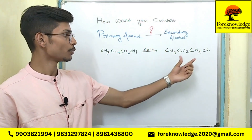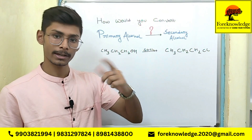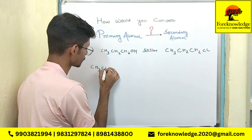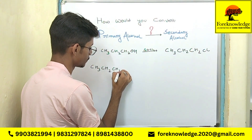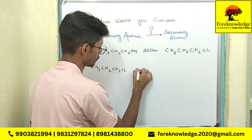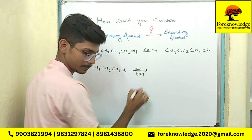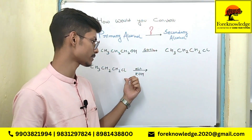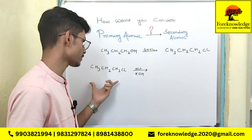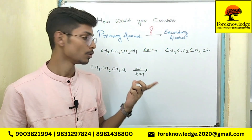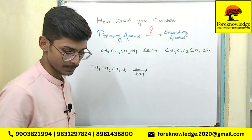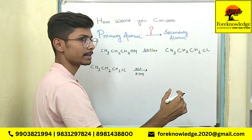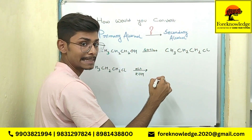In the next step, we will react propyl chloride with alcoholic KOH. As we covered in class 11 in the preparation of alkene chapter, when alcoholic KOH reacts with an alkyl halide, we get a double bond. So here we will get propene.